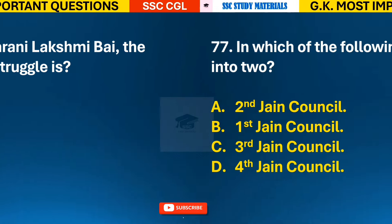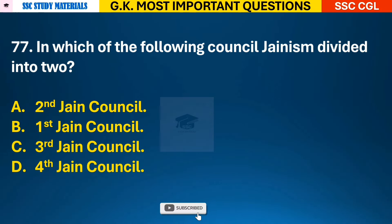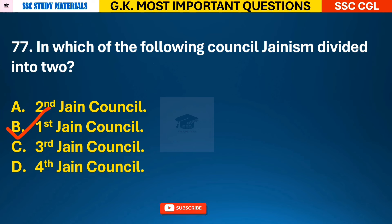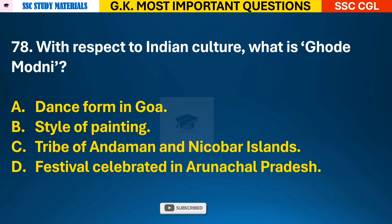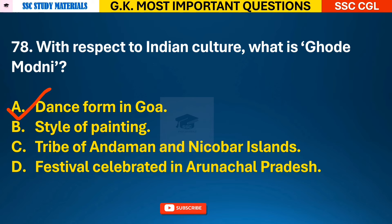Question 77: In which of the following councils did Jainism divide into two? Answer B - it was the 1st Jain Council in which Jainism divided into two. Question 78: With respect to Indian culture, what is Ghode Modani? Answer A - it is a dance form in Goa.